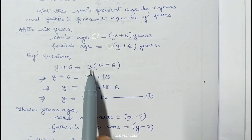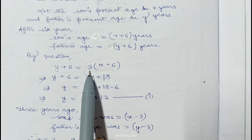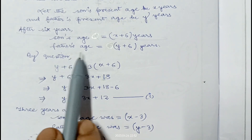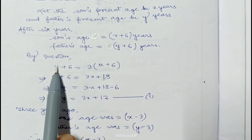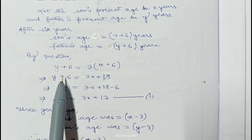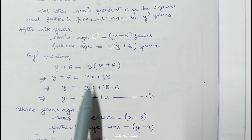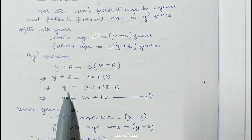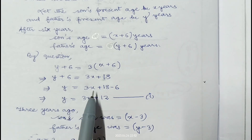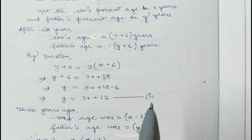As given in the question, 6 years hence a man's age will be 3 times the age of his son, so y plus 6 equals 3 times x plus 6. So y plus 6 equals 3x plus 18, giving y equals 3x plus 12. Let it be equation number 1.